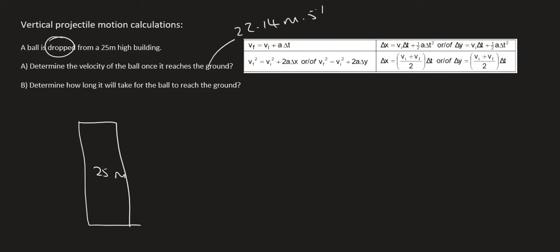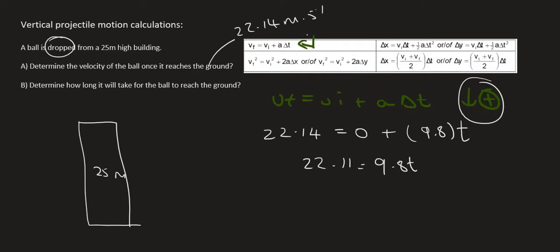B. Determine how long it will take for the ball to reach the ground. We could simply use this first equation now. We could say vf is equal to v initial plus a change in time. Let's choose downwards as positive. The final velocity we now know is 22.14. The initial velocity is zero. Gravity is 9.8 because it acts down and we've chosen down as positive. Then what we can do is just say 9.8t is equal to 22.14. If you divide by 9.8, you end up with 2.26 seconds.